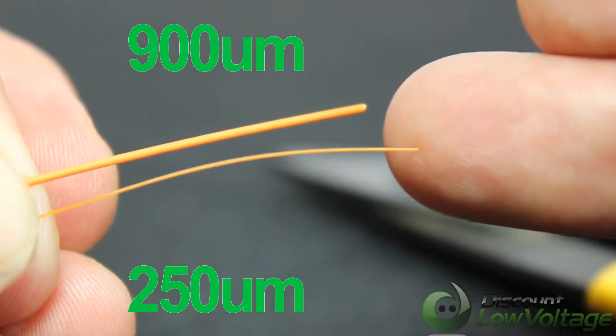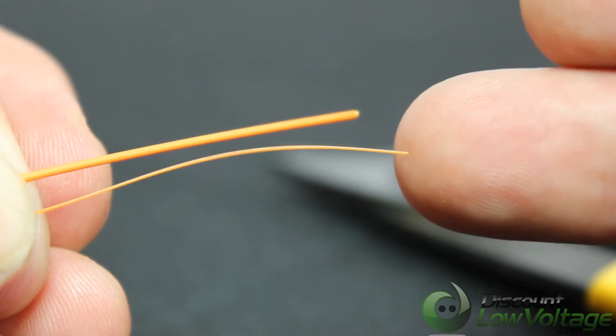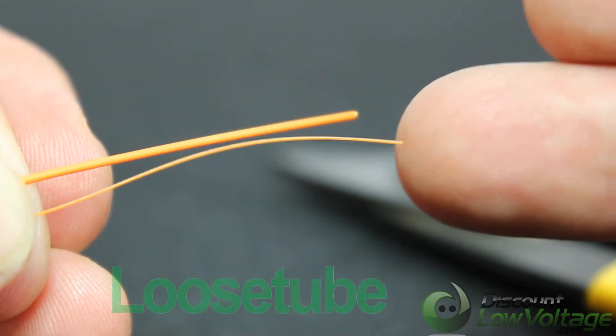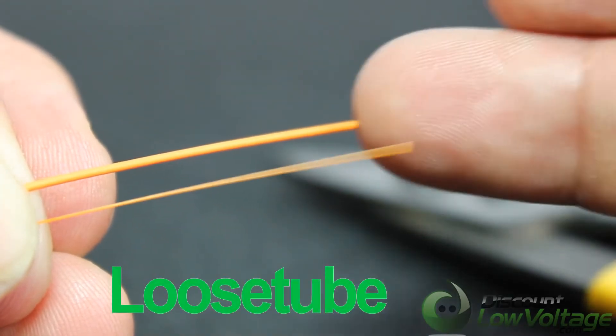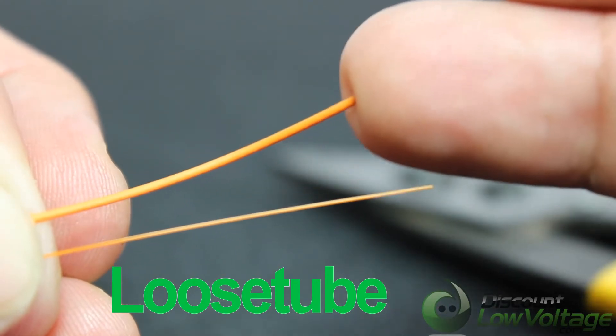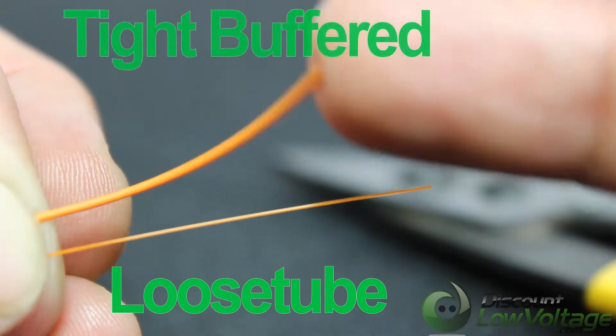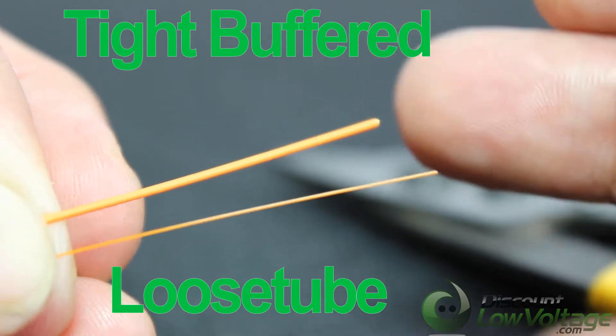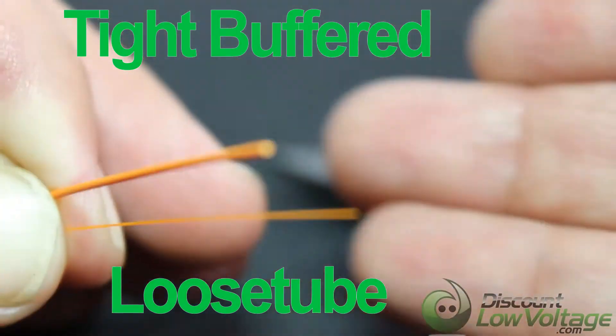Now the 250 size, the smaller of the two, you'll find this commonly manufactured with loose tube fiber optic cable. The other one, the 900, you'll find this commonly installed with tight buffered cables.